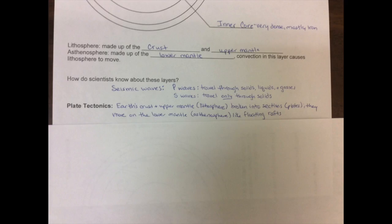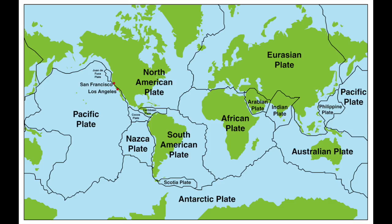So all of this information leads us to the theory of plate tectonics, which is the idea that Earth's crust and upper mantle, remember that's called the lithosphere, is broken up into sections that we refer to as plates. And they move around on this lower mantle, remember that's called the asthenosphere, just like a raft might move on a river due to the current of the stream.